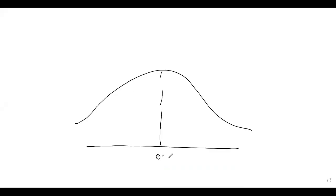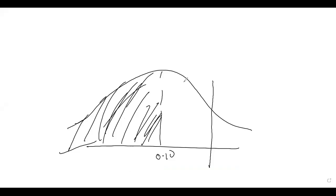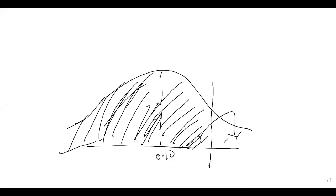The null hypothesis is that the proportion should be less than or equal to 0.1. If you draw the diagram, we are looking for all values less than or equal to 0.1. But because of sampling error, we allow for a little more. Everything within that range will be the acceptance region, and anything greater than that will be the rejection region.